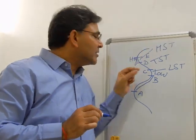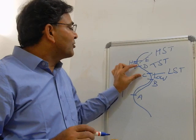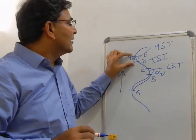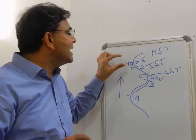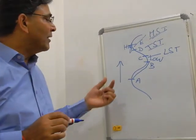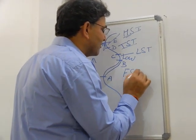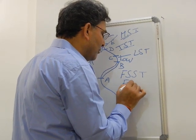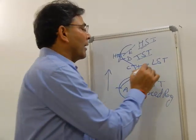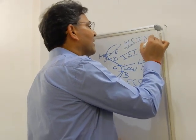So when the sea level was rising, the start of rise in sea level is the lowstand system track. When the sea level is rising very rapidly, that is the transgressive system track. When the rise in sea level is very slow and that is the end of the rise in sea level, that is known as the highstand system track. From point A to B, when the sea level was falling, that is known as the falling stage system track, and this takes place during forced regression. So: FSST is falling stage system track; LST is lowstand system track, which is normal regression; TST is transgression; and HST is highstand system track, again normal regression.